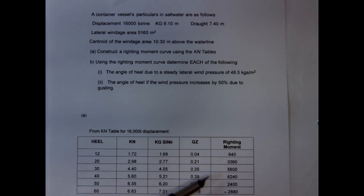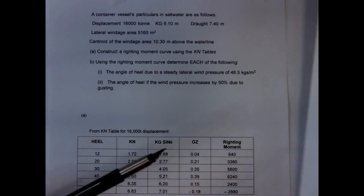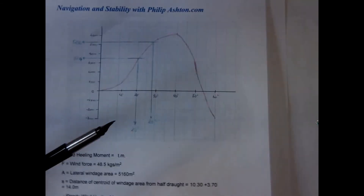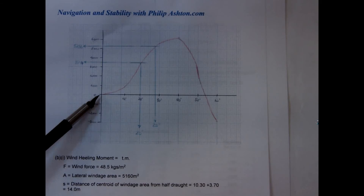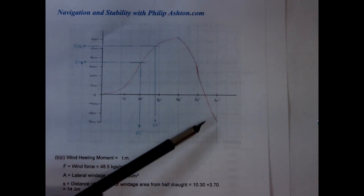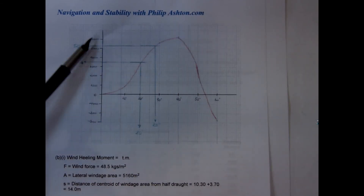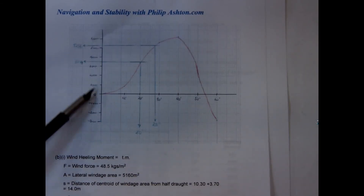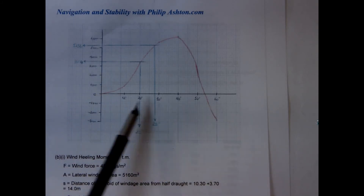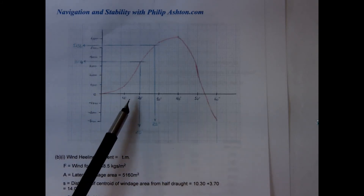Do the same for all the GZ values and that gives you your righting moment values. Once you've got those, you can draw the righting moment curve. The y-axis shows the righting moments and the x-axis shows the angle of heel.